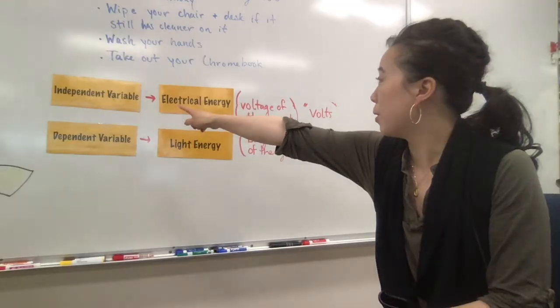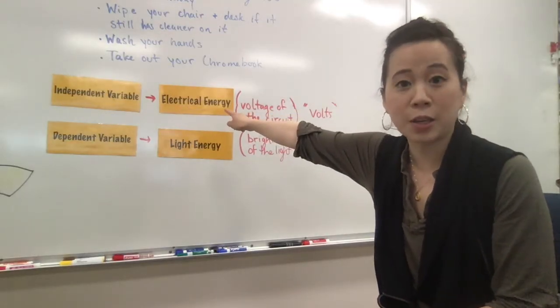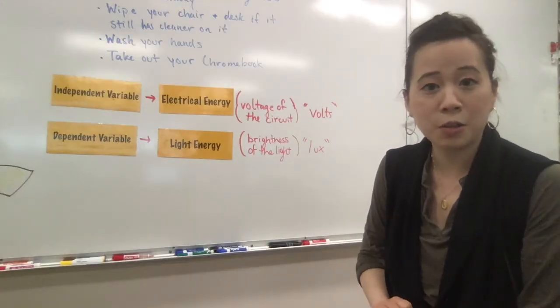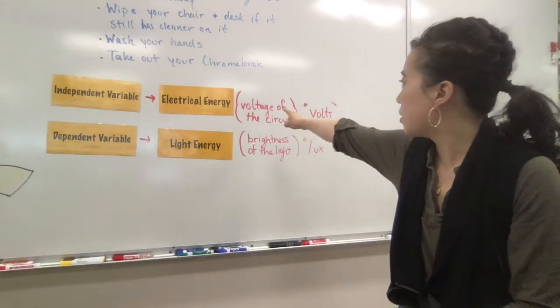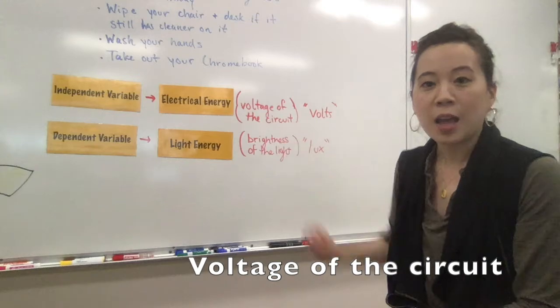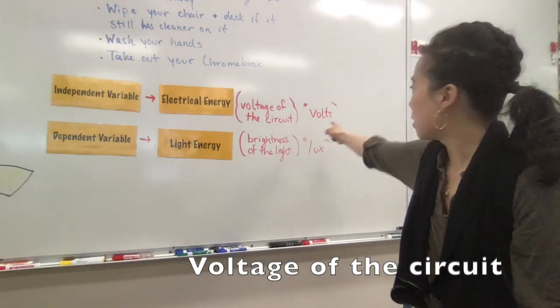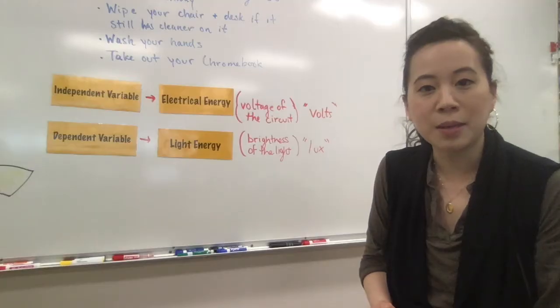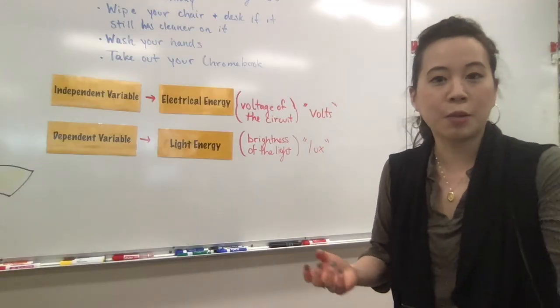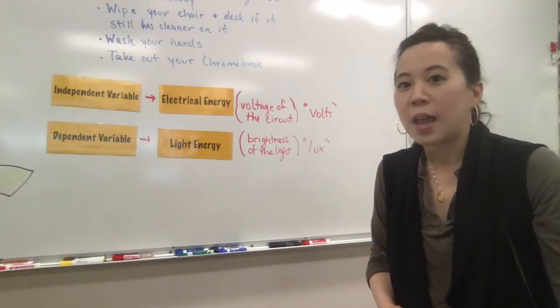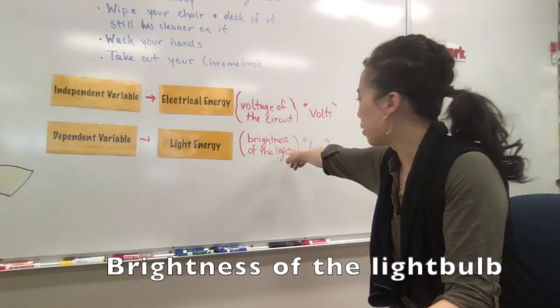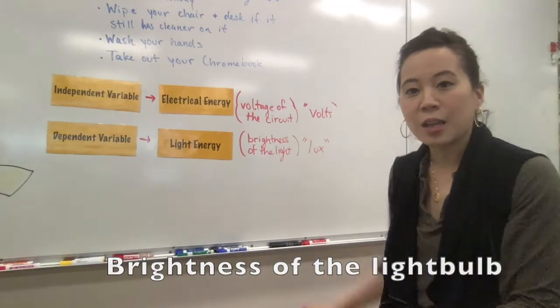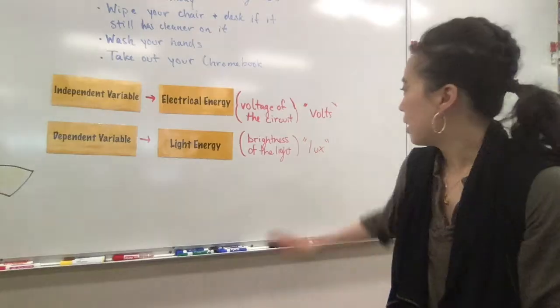In a way, our independent variable is really the amount of electrical energy. And the factor of electrical energy that we're manipulating is the voltage of the circuit. And the units for voltage is volts. Then the dependent variable of the lab is the amount of light energy that you were measuring with your phone. And you're going to measure the brightness of the light. And the unit for the brightness of light is lux.